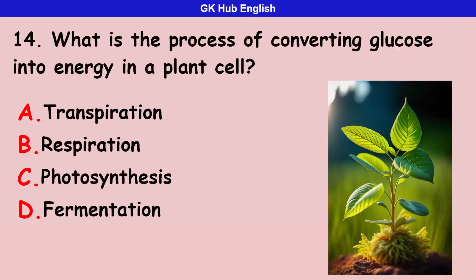Fourteenth question: what is the process of converting glucose into energy in a plant cell? Option A is transpiration. Option B is respiration. Option C is photosynthesis. Option D is fermentation.